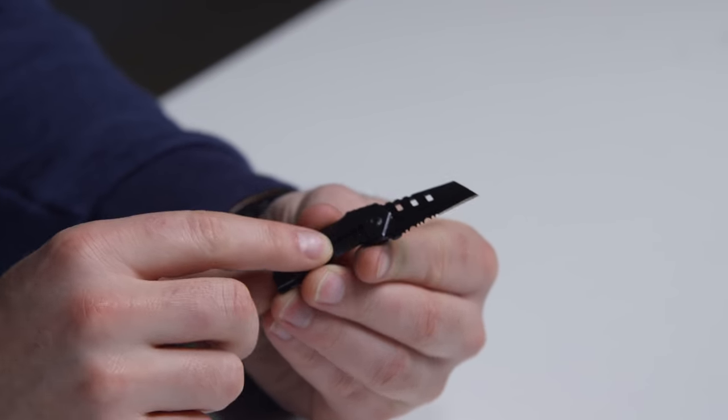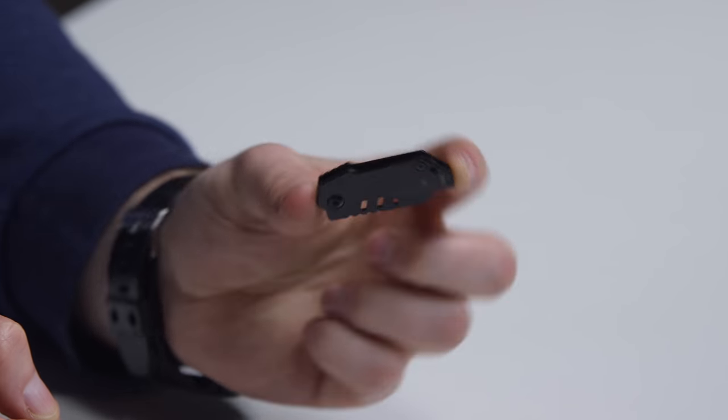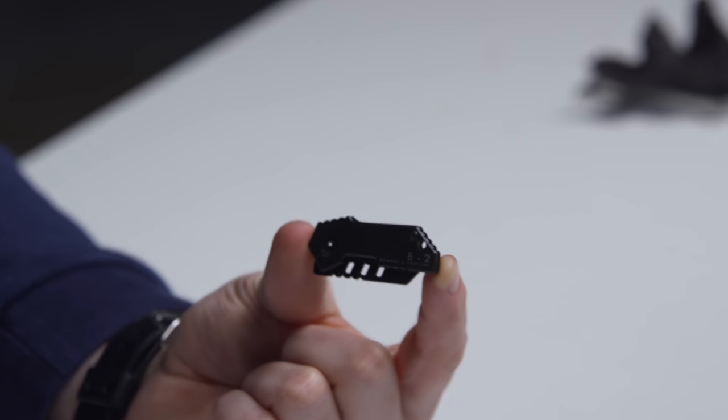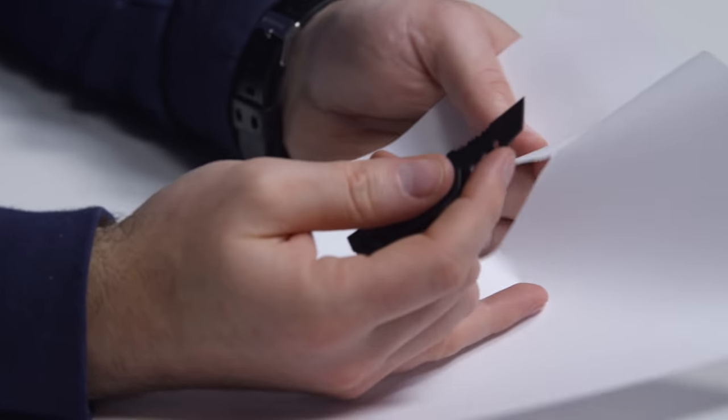A lock on it to keep the blade in place right there. There's a hole there too, so I suppose you could put this on a key chain of some sort. It might be the tiniest pocket knife I've ever held, in fact. We should probably cut something open. See that, Jack? Look at that. Clean cut right there.